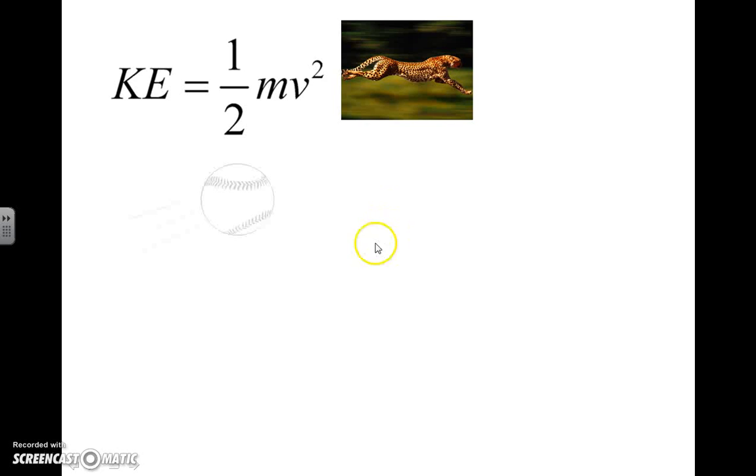I also have a moving baseball here. Since they have mass and velocity, they contain kinetic energy. Now, if the baseball is flying upward, it would be converting its kinetic energy. It would be slowing down. Its velocity would be decreasing. And it would be converting that with increasing height into gravitational potential energy.